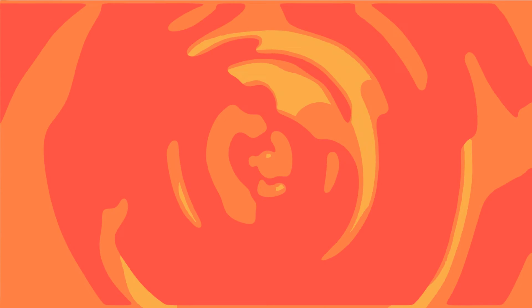We have so many terms that we use to describe the morphology of red blood cells. I will group them into three categories.